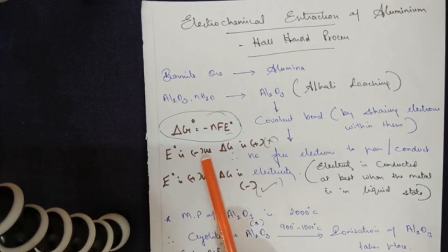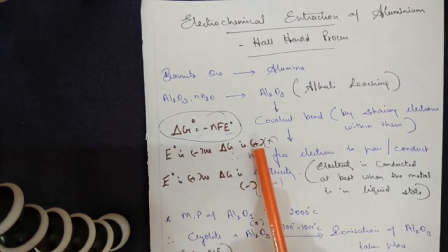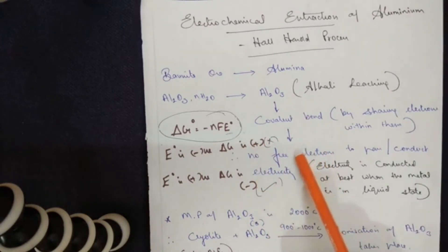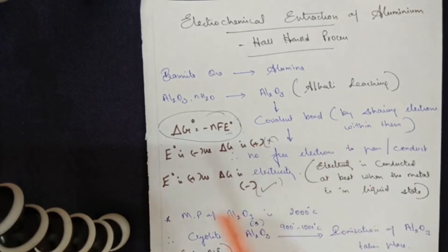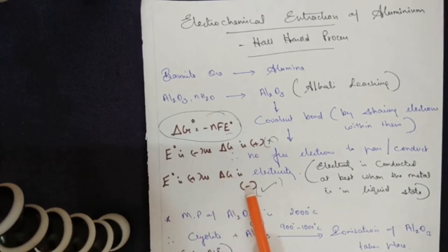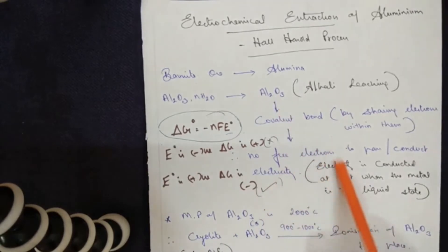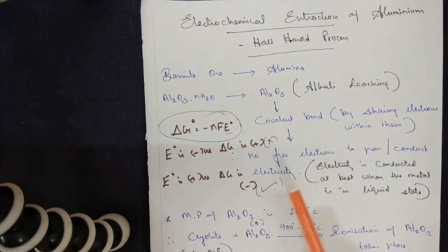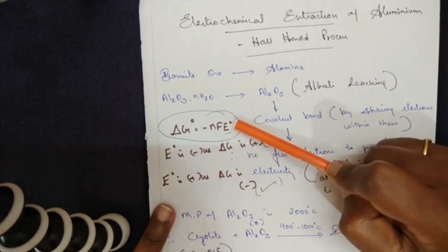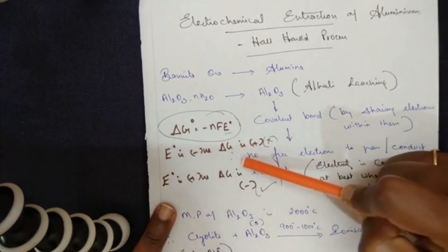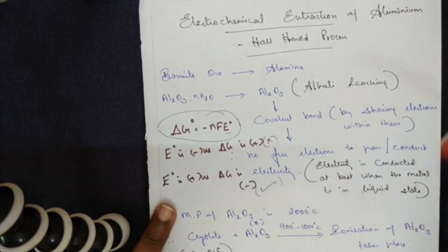If E⁰ is negative, ΔG will be positive, and the reaction is non-spontaneous — the slope goes up the graph. If E⁰ is positive, ΔG is negative, and the slope goes down the graph, meaning the reaction proceeds spontaneously. The purpose of finding the E⁰ value is to determine whether the reaction is possible or not.